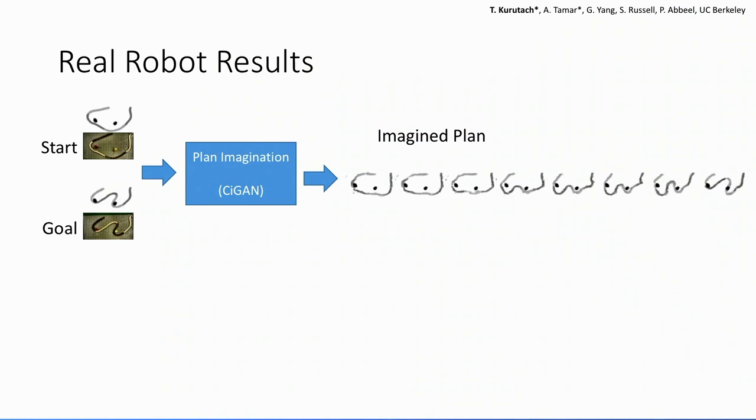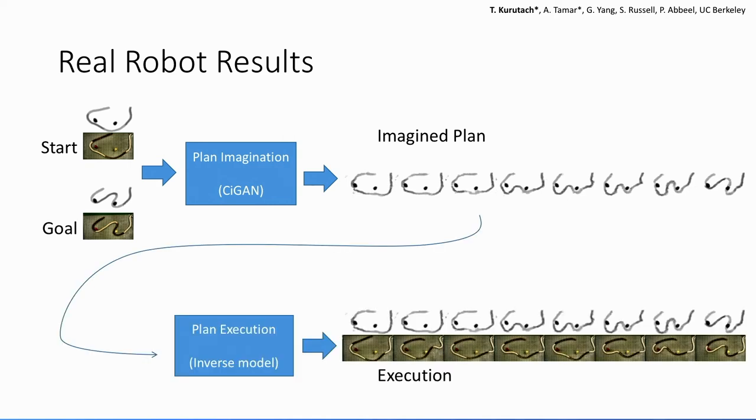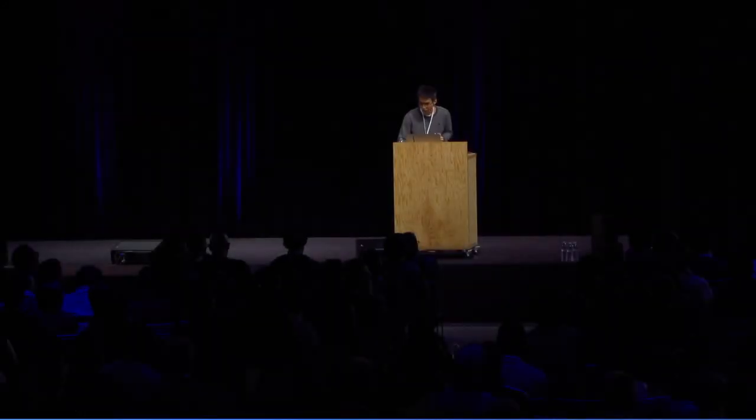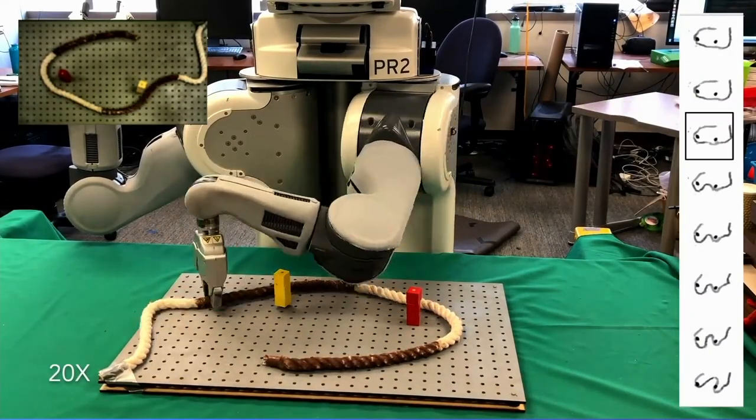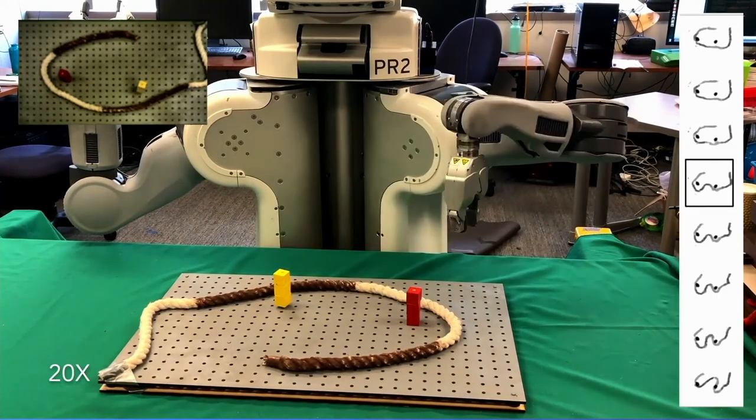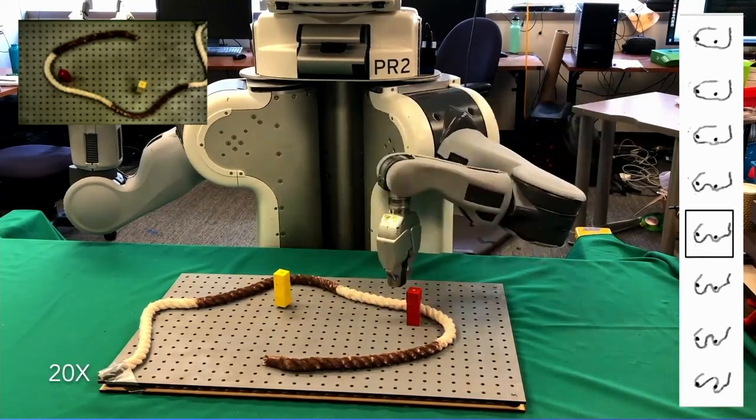So this is an even more exciting result very recently. So before we had the start and the goal configurations and we can generate a plan. Now we take this to the real robot and learn an inverse model to follow the trajectories. So let's see the video here.